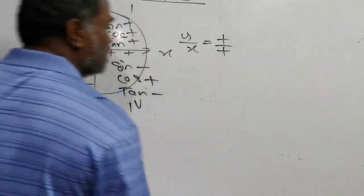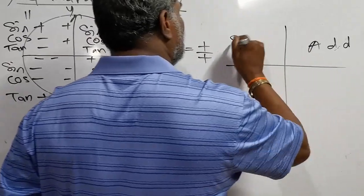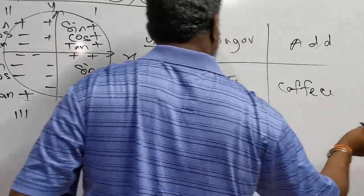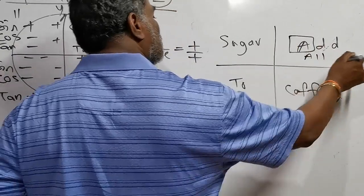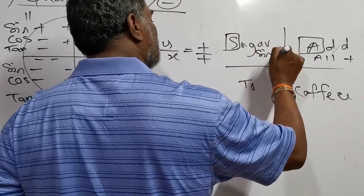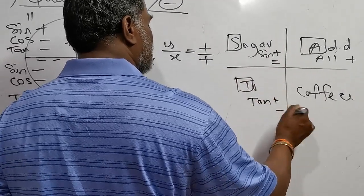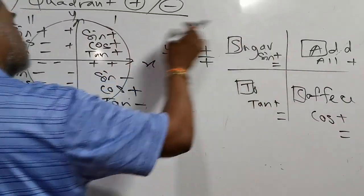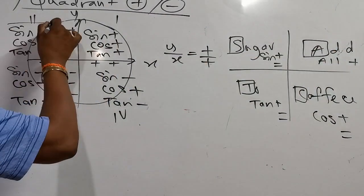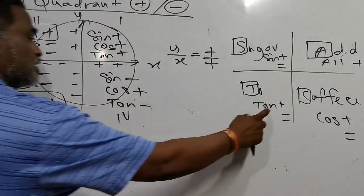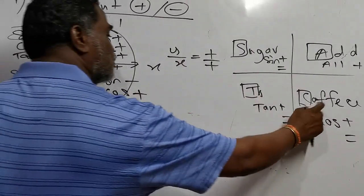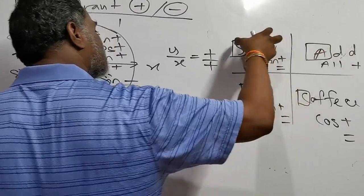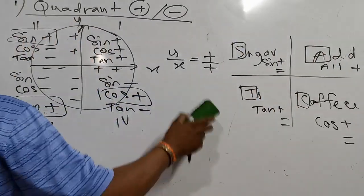To remember this, use the mnemonic: Add Sugar To Coffee. A stands for All — all positive in the first quadrant. S stands for Sine positive in the second quadrant, the other two negative. T means Tangent positive in the third quadrant, the other two negative. C means Cos positive in the fourth quadrant, the other two negative. This is to remember; the unit circle explanation is to understand.